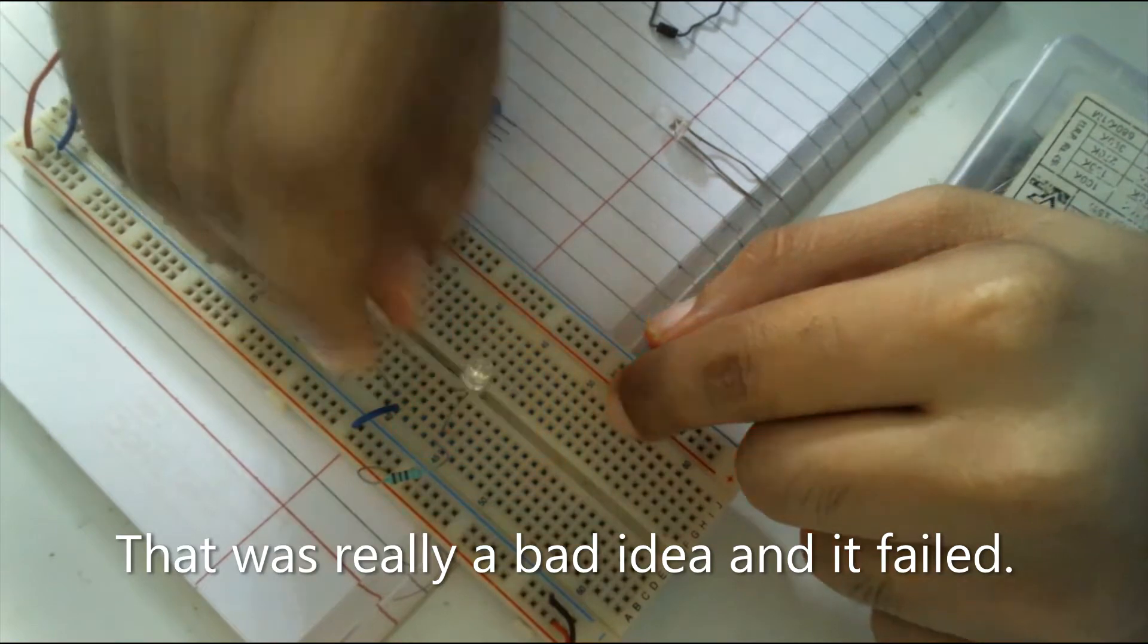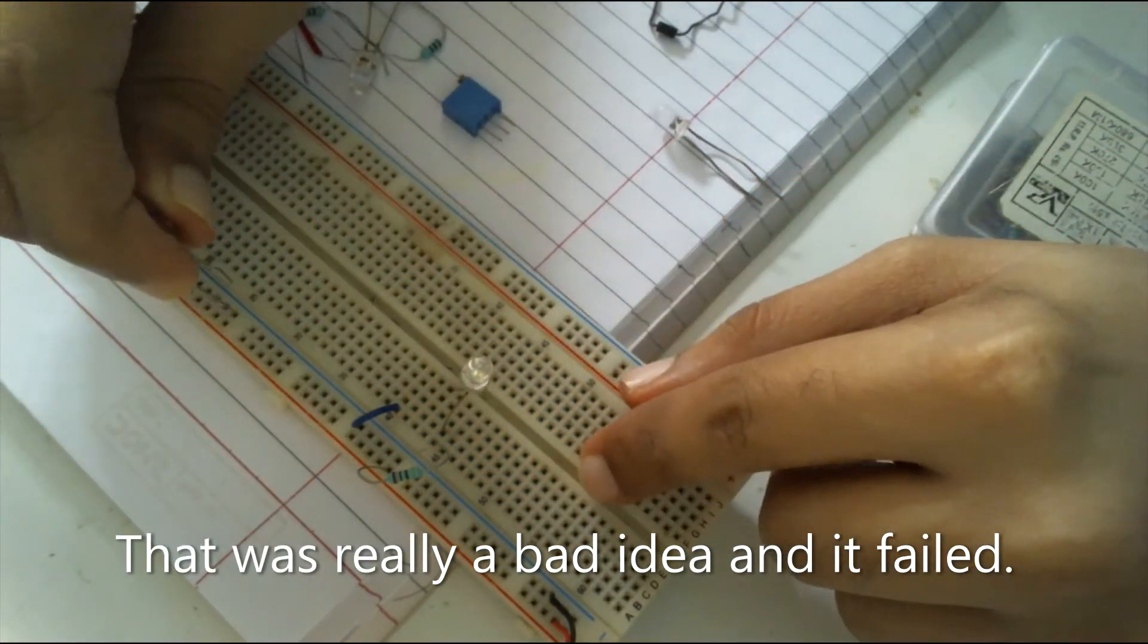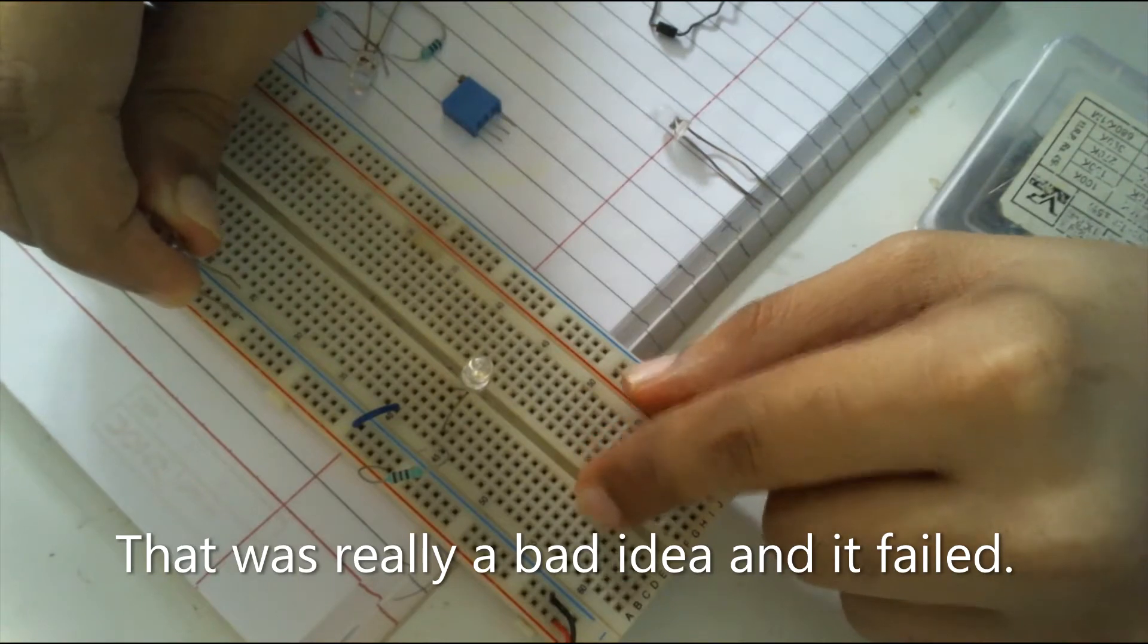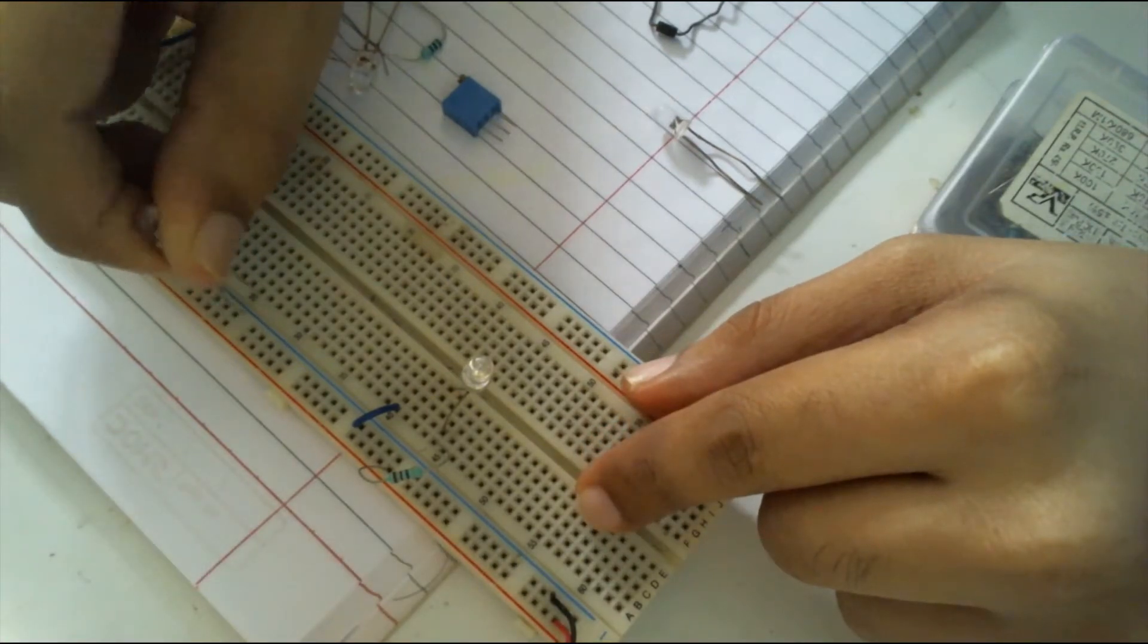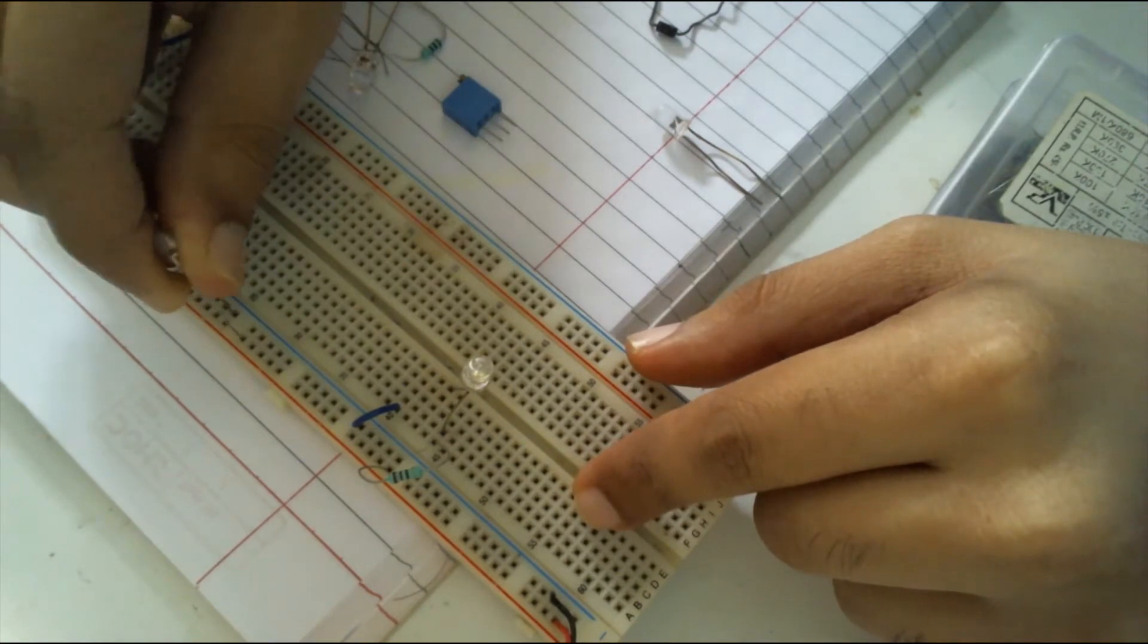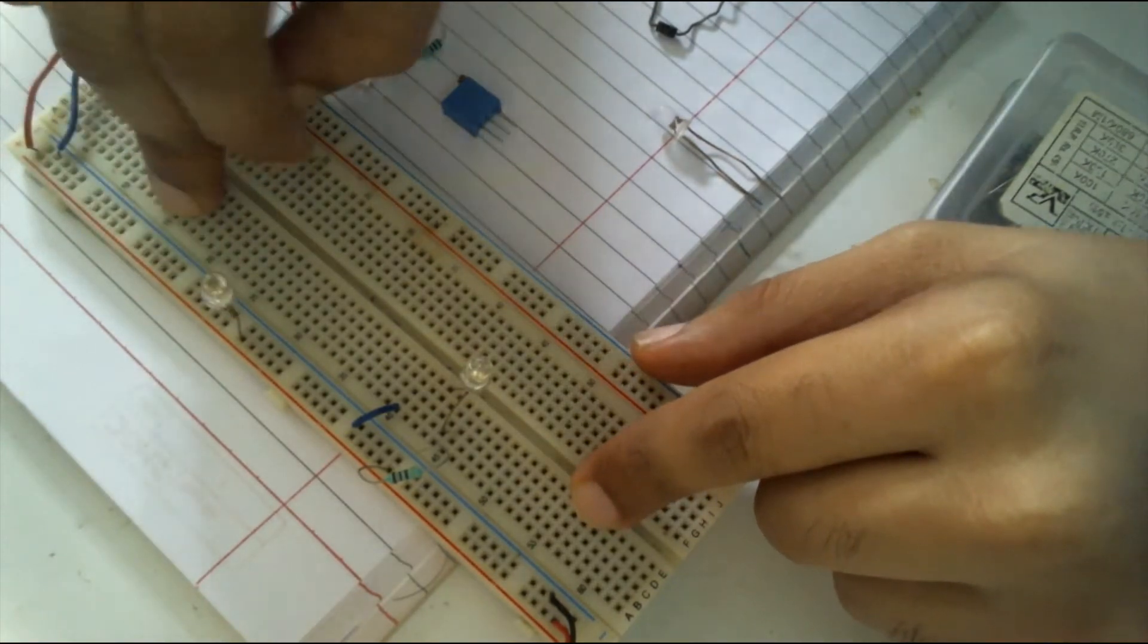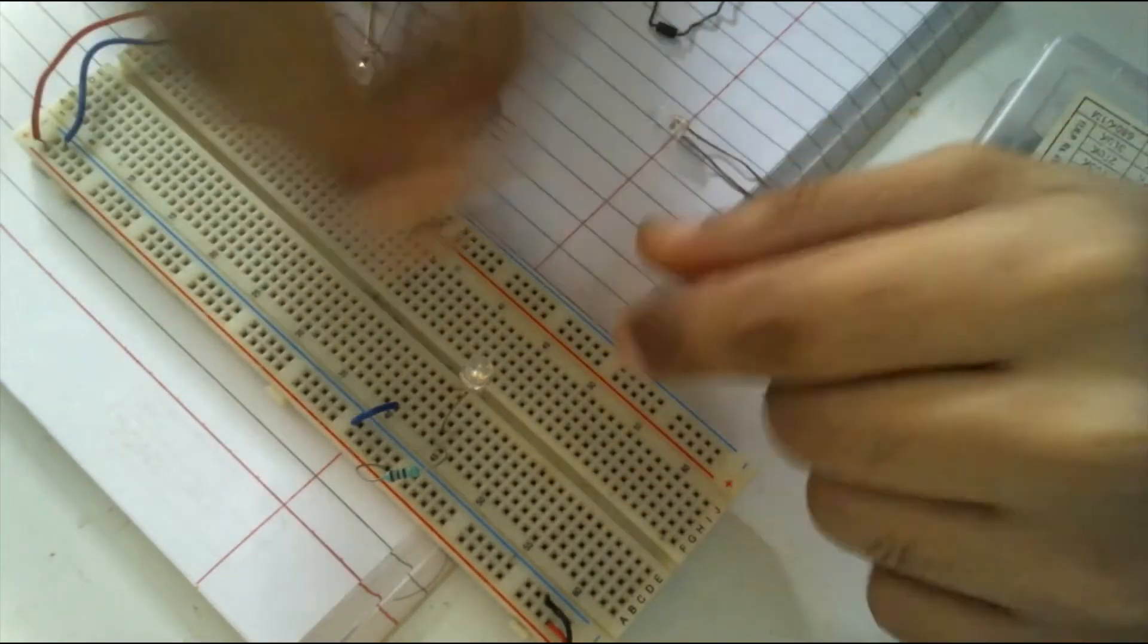So let's do this by connecting directly to reverse bias and blowing it. I will connect negative to positive and positive to negative like this. Now let's see what happens.